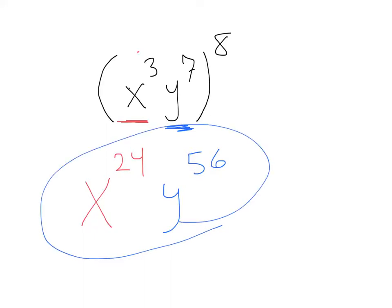And there we go. So all we did was we multiplied each exponent to the exponent overall, which was 8.